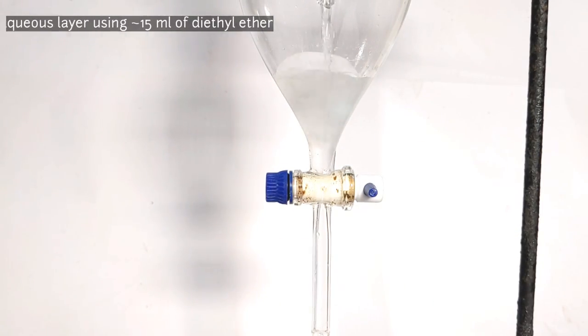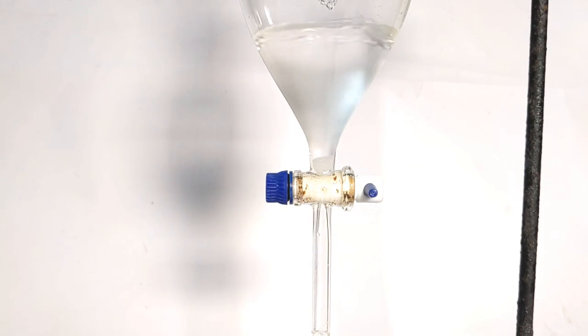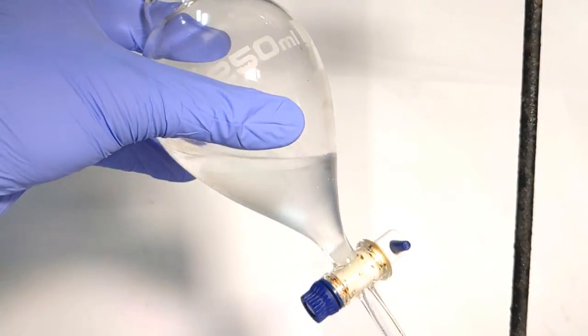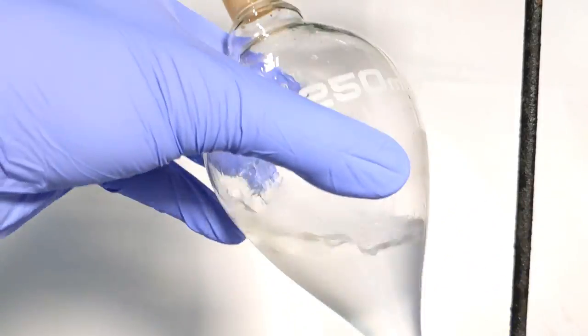The lower aqueous layer was added back to the separatory funnel and approximately 15 milliliters of diethyl ether was added on the top. The separatory funnel was then capped and shaken with frequent venting to release the pressure built inside.